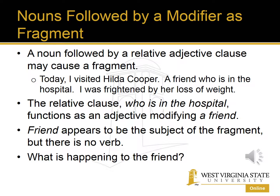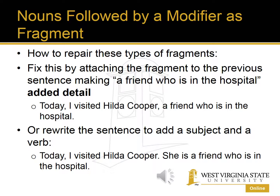Sometimes a noun followed by an adjective clause, such as a relative clause, causes a fragment. For example: 'Today I visited Hilda Cooper, a friend who is in the hospital. I was frightened by her loss of weight.' The relative clause 'who is in the hospital' functions as an adjective modifying 'a friend.' 'Friend' appears to be the subject, but there is no verb — what is happening to the friend? We could fix this fragment by attaching it to the previous sentence, making 'a friend who is in the hospital' add a detail about Hilda Cooper.